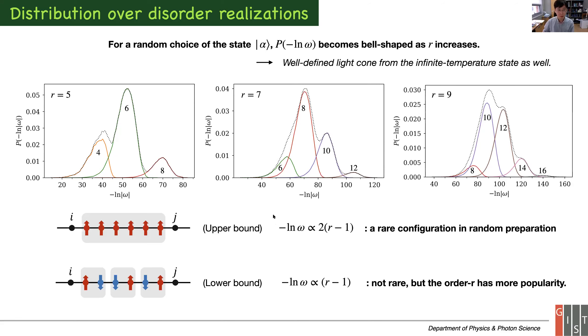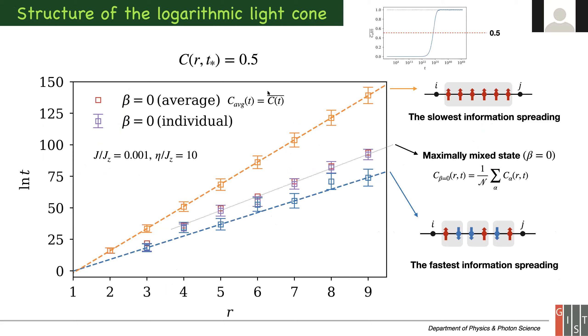This is now full picture of logarithmic light cone. These are points of T star giving 0.5 of OTOC for every R. The two lines of bounds are directly given by perturbation theory and match well. The line in between is maximally mixed state, beta equals 0. If you check the error bar and distribution, the average is really meaningful. So we have logarithmic light cone.